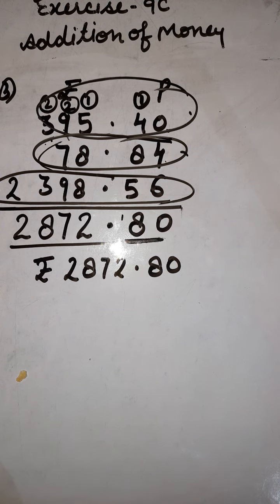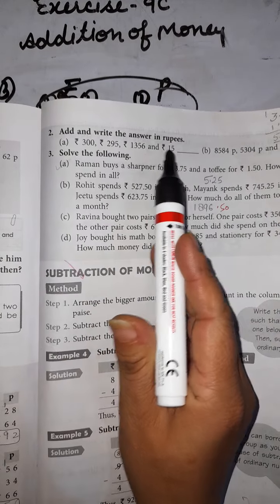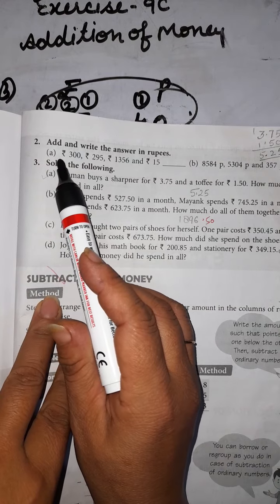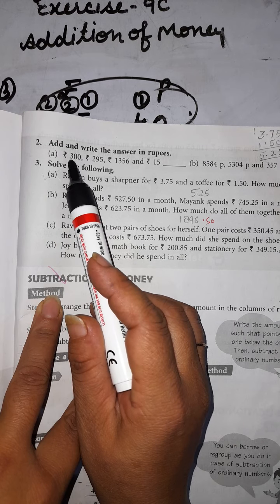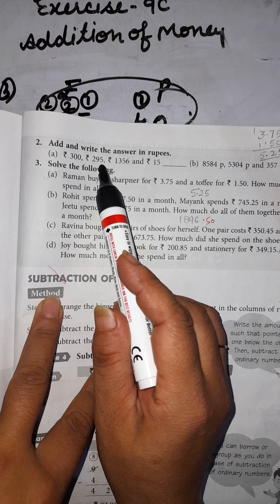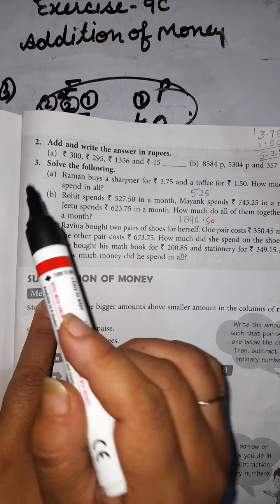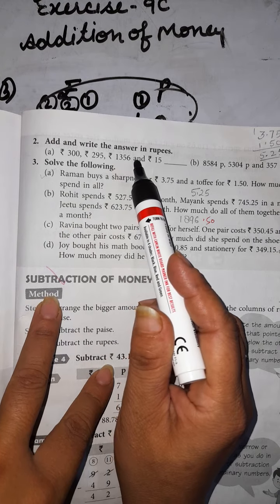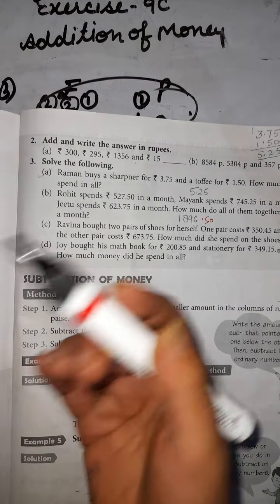Now here is one more question: add and write the answer in rupees. Question A is straightforward — it involves rupees only, no paise. The amounts are rupees 300, rupees 295, rupees 1,356, and rupees 15. We will arrange these amounts in the rupees column, writing the largest number first: 1,356, then 300, then 295, and finally 15. Then we add easily.